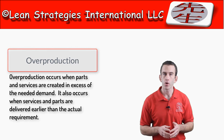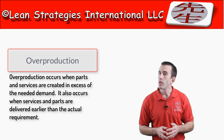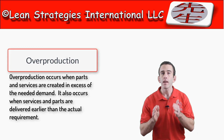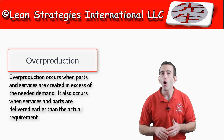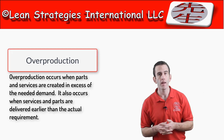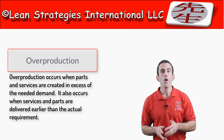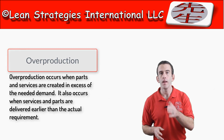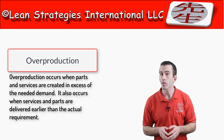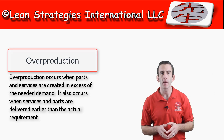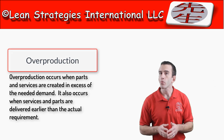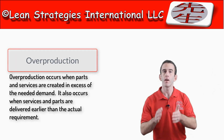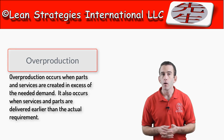The next type of waste is the deadliest form of waste — overproduction. Overproduction is the deadliest because it enhances and magnifies all other forms of waste. It occurs when parts and services are created in excess of actual needed demand, or when services and parts are delivered earlier than the actual requirement.